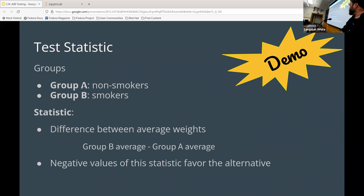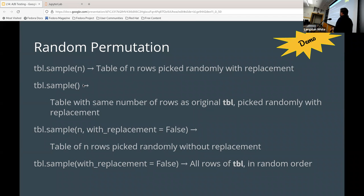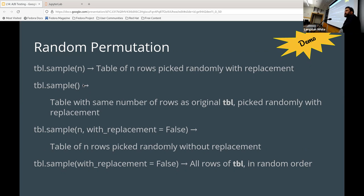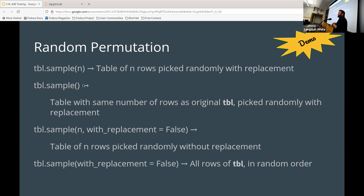One thing I wanted to talk about is permutations. Does anybody know what a permutation is? When you say a single permutation, you usually mean one of the rearrangements. Technically speaking, your first version of the list is also a permutation, but generally when you say it you mean the next one. You can mathematically figure out all the available permutations for a given list.